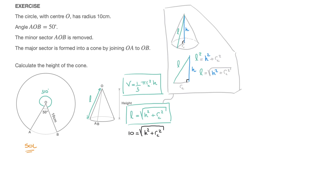Back to our problem. Using the slant height formula, alongside the fact that this cone's slant height equals the circular sector's radius, we've established that 10 equals the square root of h squared plus r sub c squared. Now, what is the radius of the cone at its base? The radius at this cone's base is not equal to 10 cm. Just think of how you'd construct the cone by joining OA to OB — the radius at the base has to be less than 10 cm.